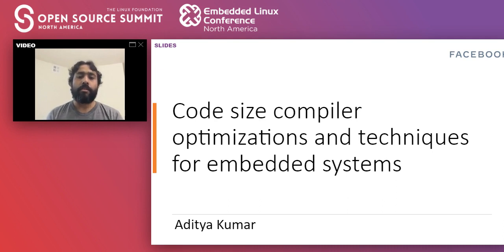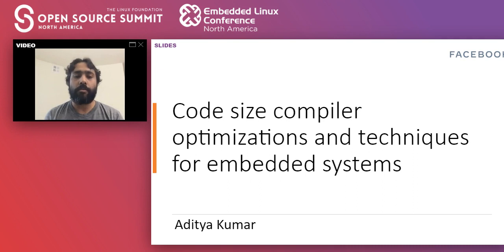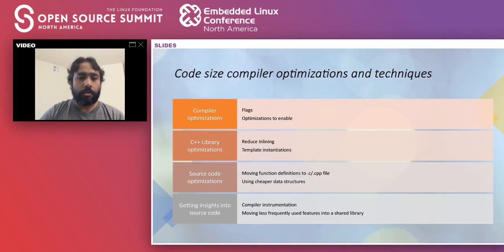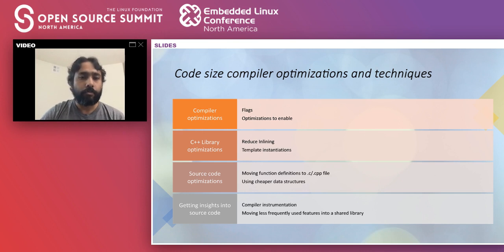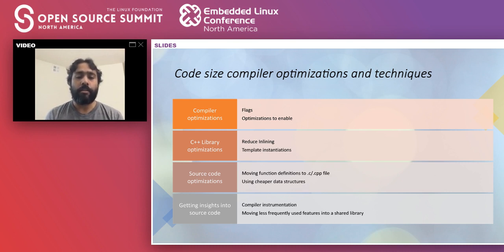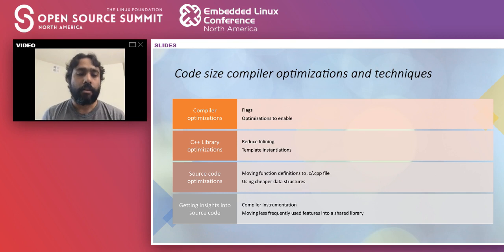Here we will discuss commonly well-known techniques to reduce code size. Most of these you can do right away by using compiler features or standard software engineering techniques. Today I'll be discussing four methodologies: compiler optimizations, C++ library optimizations, source code optimizations, and getting insight into the software by introspecting the code base.